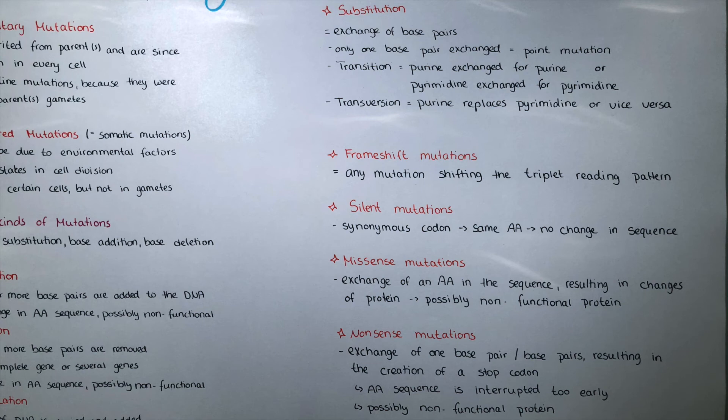In a frameshift mutation, we describe any mutation which leads to a shifting of the triplet reading pattern. You know that always three bases code for one amino acid. If we delete one, add one, add even more, or exchange some bases, then this reading pattern doesn't work anymore. You can imagine it like a puzzle or a domino — suddenly one part is taken out and you can't always read three.